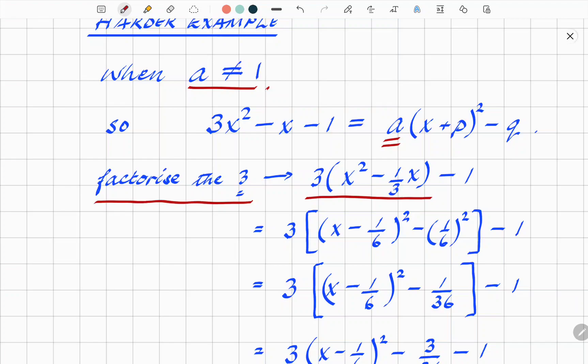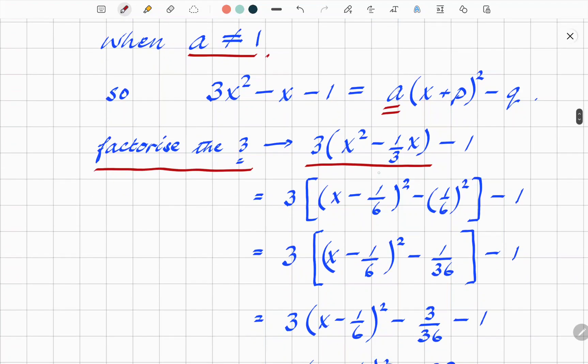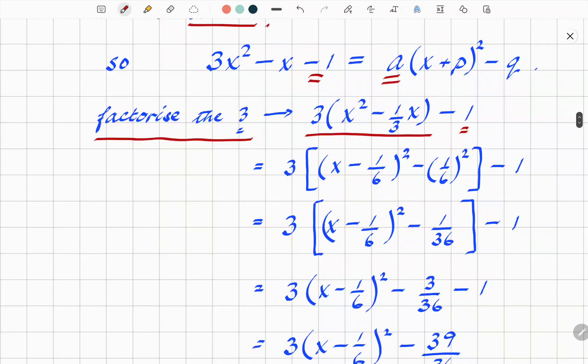But obviously we need to find a different p and q for this particular expression. The first thing you do is factorize out the 3 in this particular case. So whatever the coefficient of the x² is, factorize it out for the first two terms. I know there's different ways of doing it. As I prefer, just take 3 outside of the brackets for the first two terms only.